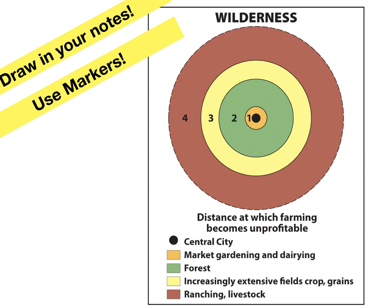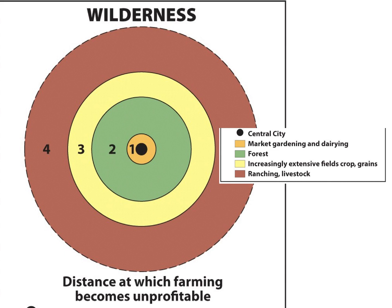The first type of agricultural activity is the market gardening and dairying zone. The second type is increasingly extensive field crops like grains. In between, you have ring two, which is a forest or buffer zone. Looking closer at the model, we see our black dot in the middle is the central city, then market gardening, forest, extensive field crops, and finally ranching and livestock.